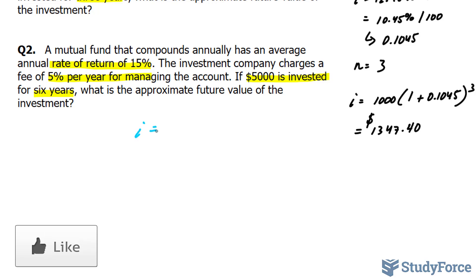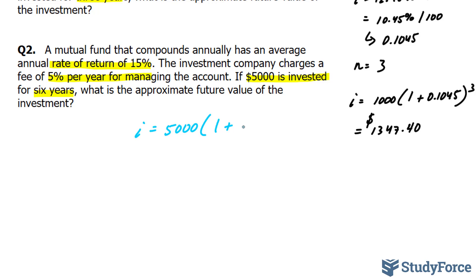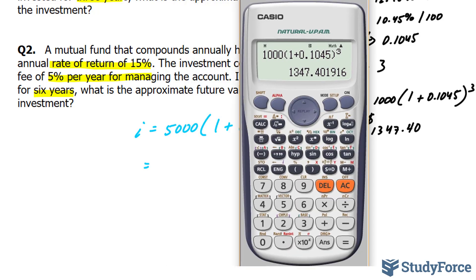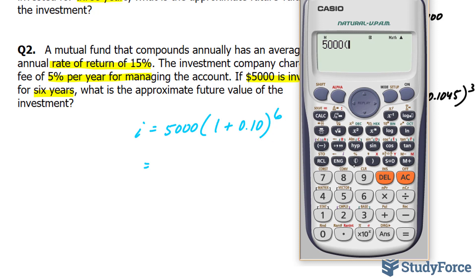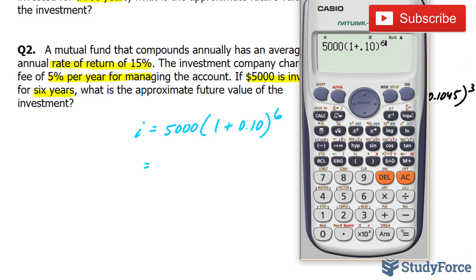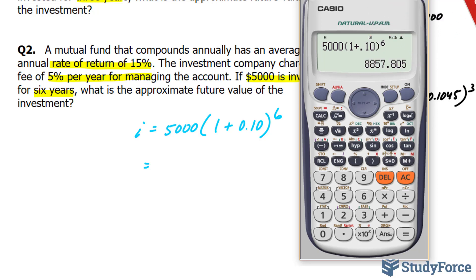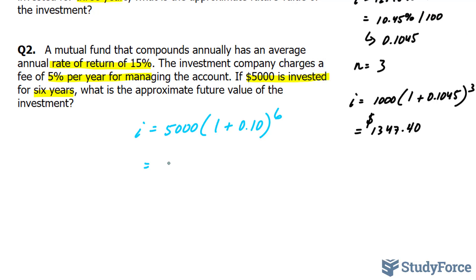We'll use the same formula with P = 5,000. We subtract 5% from 15%, giving us 10%, which becomes 0.10, and n is 6. So: 5,000 times (1 + 0.10)^6. Using our calculator, this gives us $8,857.80, which represents the future value for this account.